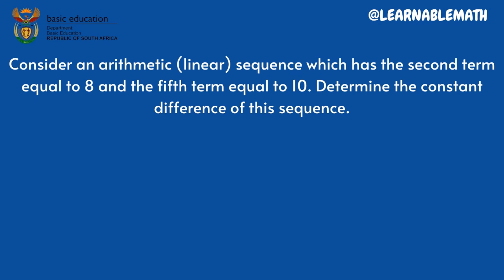We know that normally when we see such equations, what we can do is express the terms in terms of a and d, where term number 2 equals a plus d and term number 5 equals a plus 4d. Then you replace term number 2 with 8 and term number 5 with 10. Then you solve for a and d using the simultaneous or elimination method.